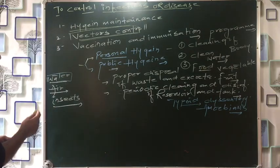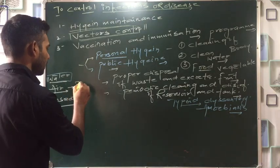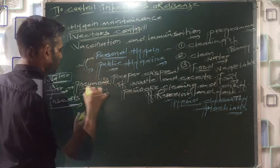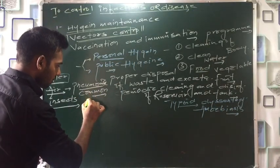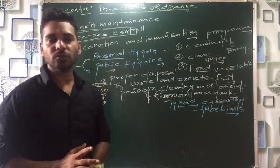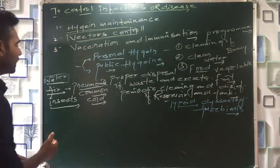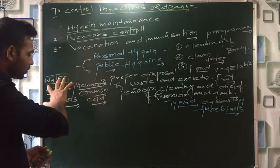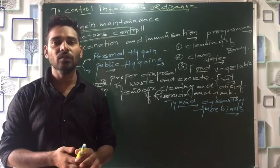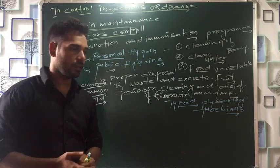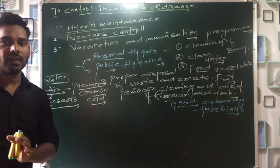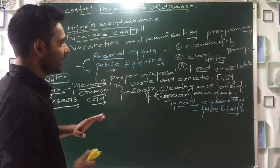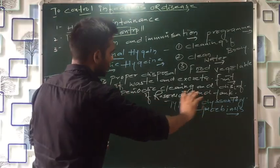Next, let's talk about air. There are many air-borne diseases — we know about pneumonia and the common cold. These diseases are caused by contaminated or polluted air. If you manage proper air quality, for example by planting trees and reducing garbage, your air stays clean. You can control these two vectors — water and air — to prevent many diseases.